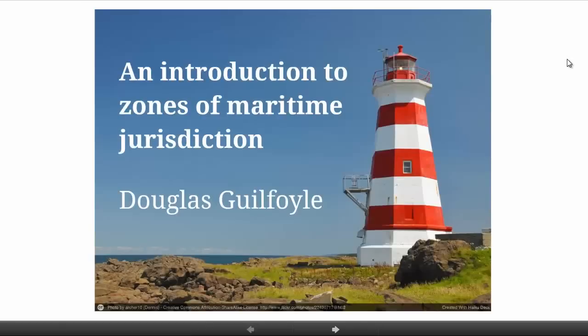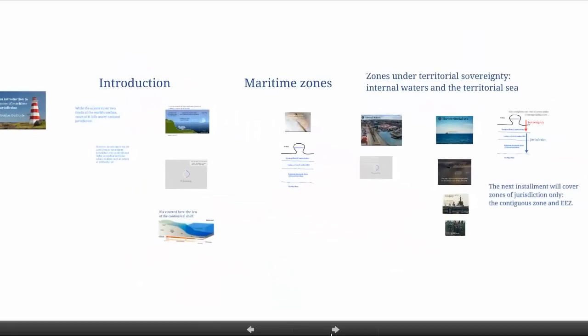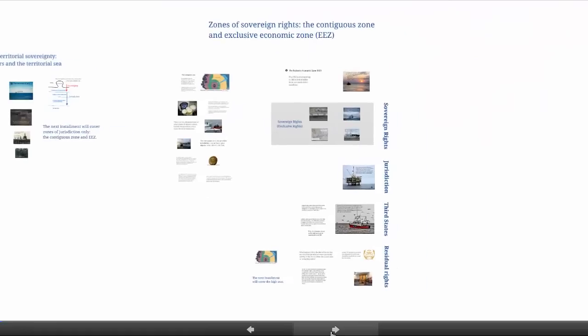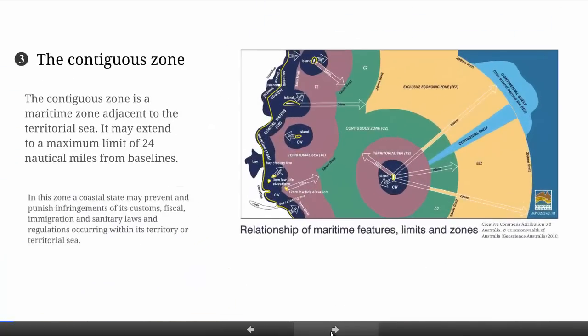Welcome to part two of this series of screencasts introducing Zones of Maritime Jurisdiction. Last time we talked broadly about maritime zones, and in particular those zones under territorial sovereignty — internal waters and the territorial sea — and we used a diagram to sketch out where we were going. We're now moving out beyond the 12 nautical mile territorial sea to look at zones of state jurisdiction, the contiguous zone and the exclusive economic zone, where states enjoy more limited rights. Let's begin our examination of these zones, where states have sovereign rights or rights of jurisdiction, starting with the contiguous zone.